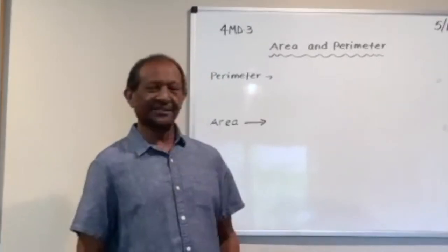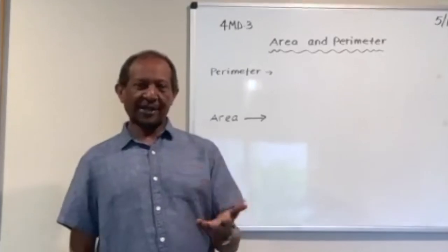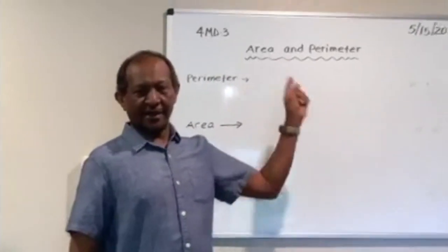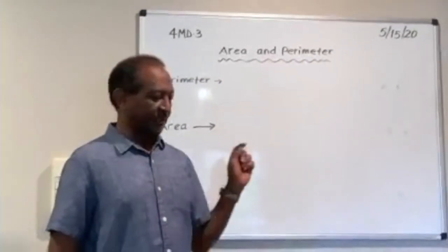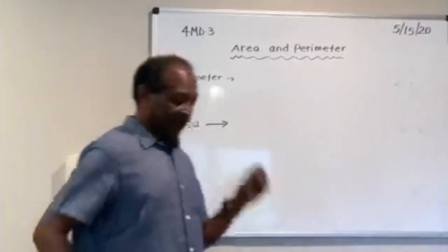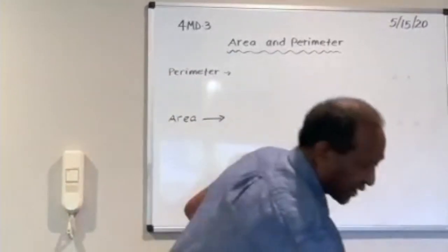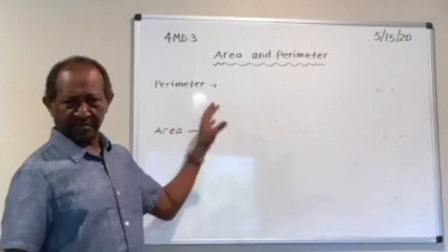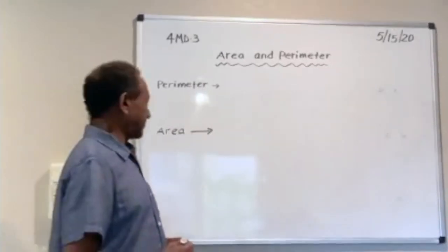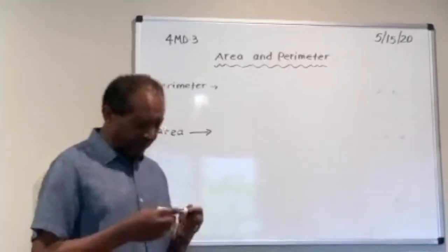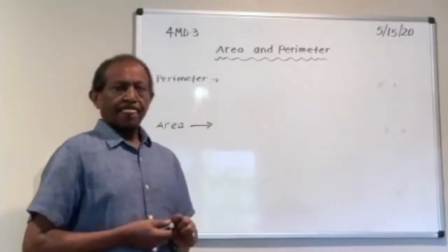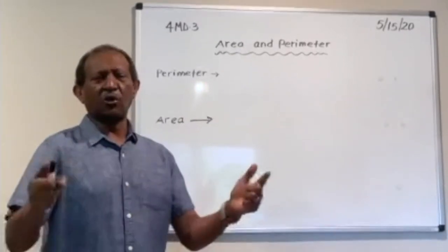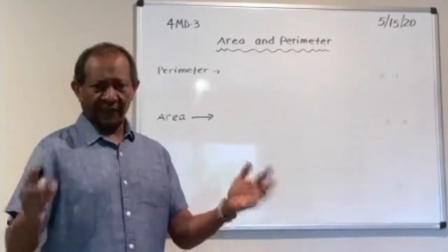Hello students. Today we are going to work on area and perimeter. To start, I will remind you what perimeter and area are. Perimeter is the distance around a closed figure.